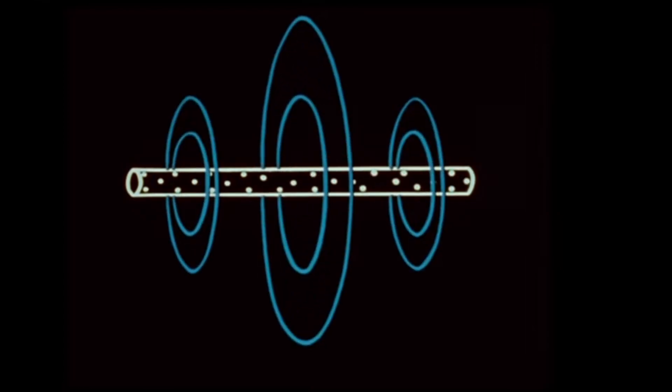As the flow reverses, the field again reaches a maximum. The lines of force are now in the opposite direction. The magnetic field thus reverses its direction at each half cycle of the signal frequency. This is known as the H field.